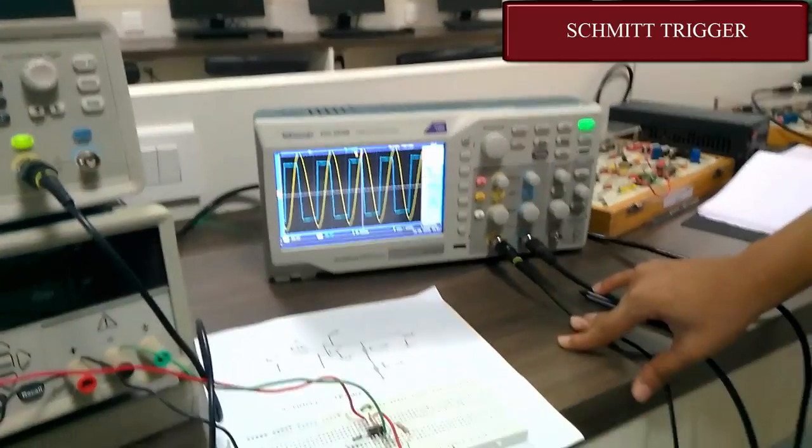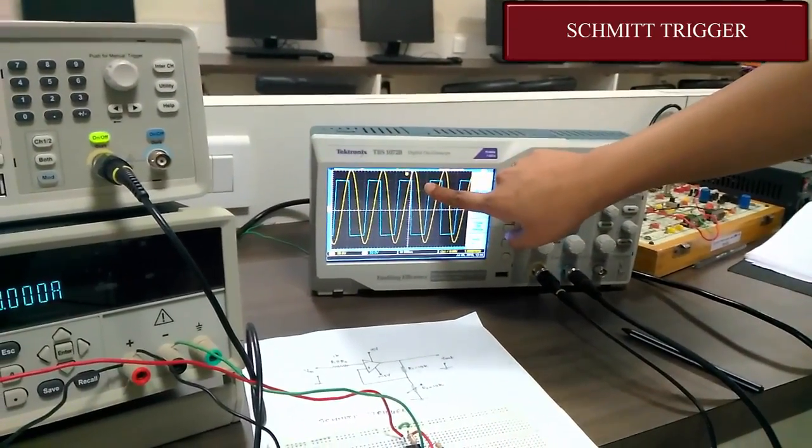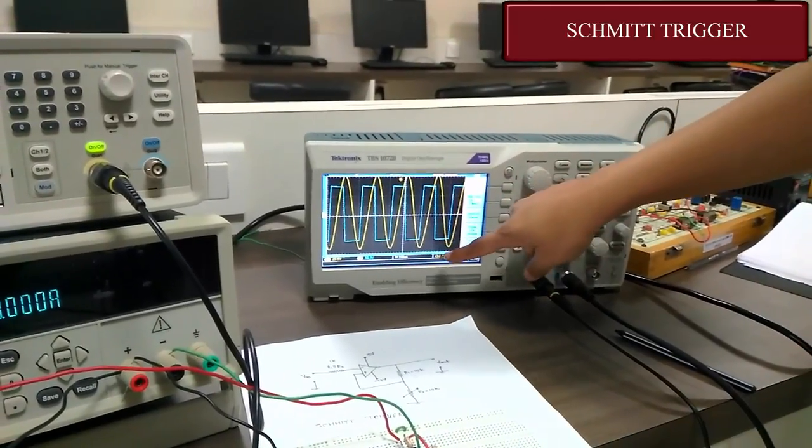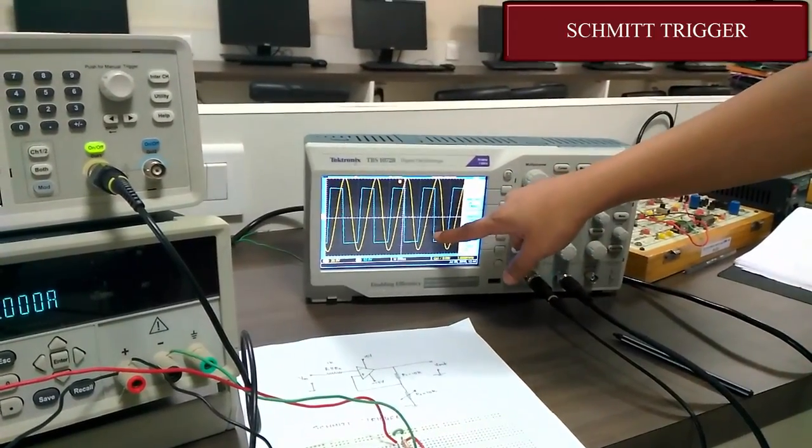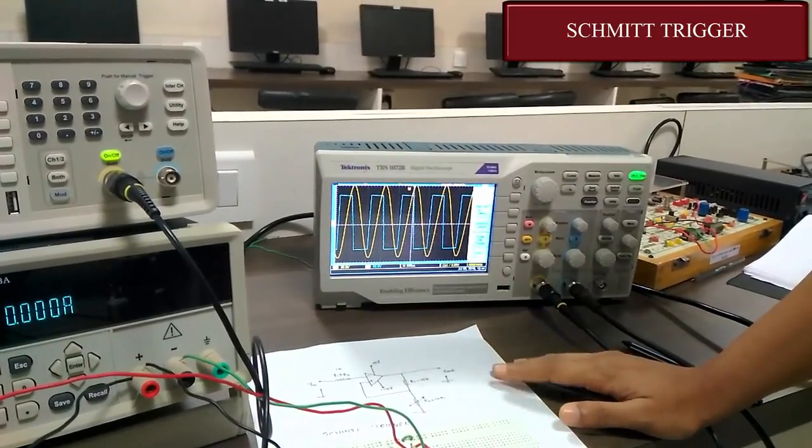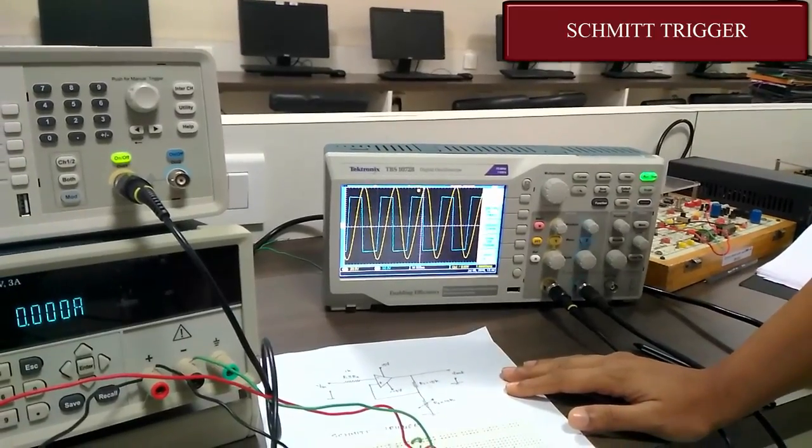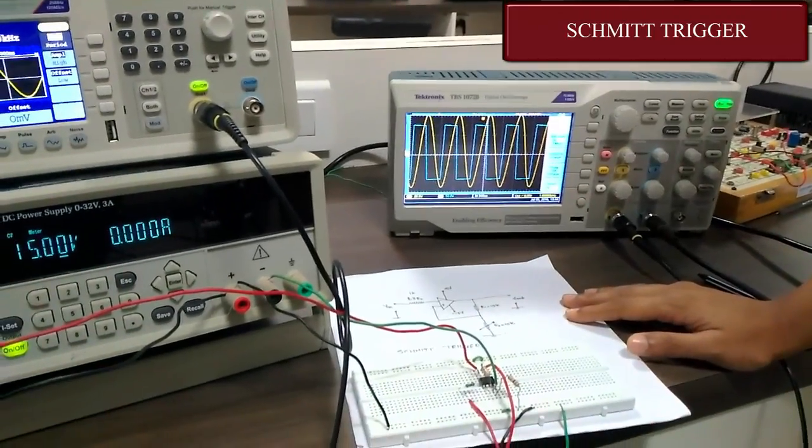This is the output of Schmitt trigger. Yellow here is the input and blue here is the output. The input is a sine wave which is converted into square wave, which is rightly done by Schmitt trigger. Here, we can also see the upper trigger point and the lower trigger point. That's all for the Schmitt trigger. Thank you for watching.